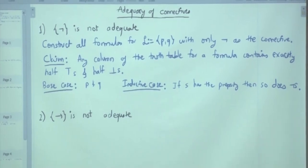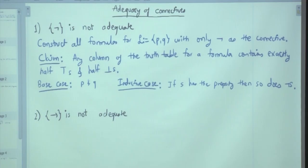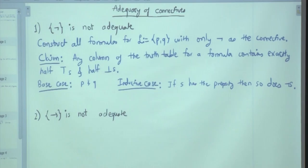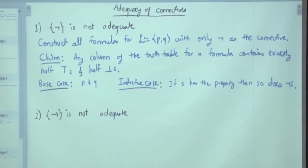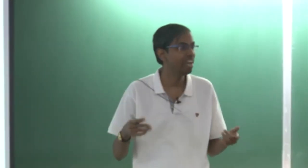What about the second problem: singleton implication is not adequate? Negation P cannot be constructed. How will you argue? Take a single variable. With a single variable, what are the formulas you can construct? P implies P, then P implies (P implies P), and so on. Whenever the truth value of P is true, the corresponding entry in the column will always be true. How will you prove that? By induction. As a consequence, negation can never be constructed.